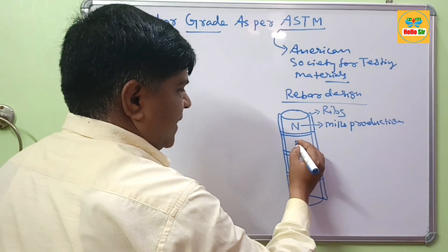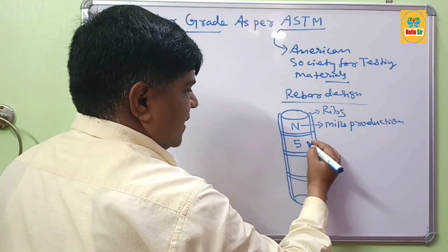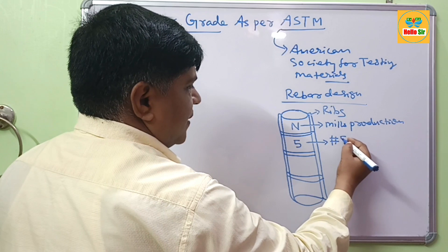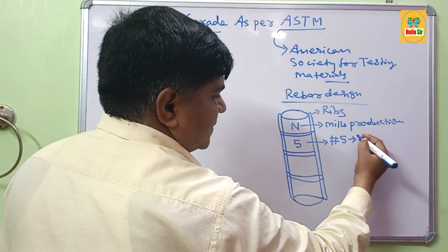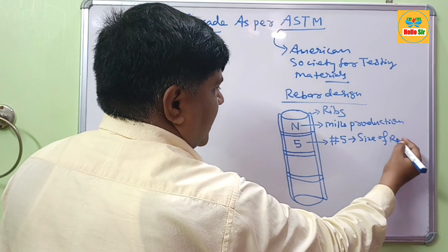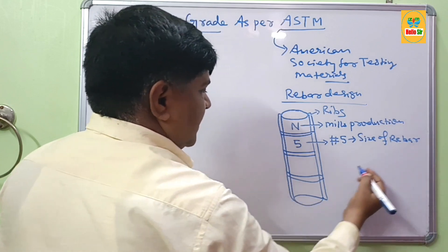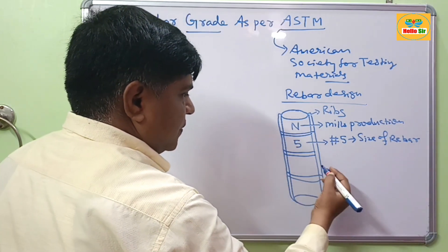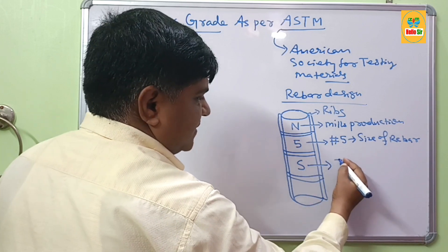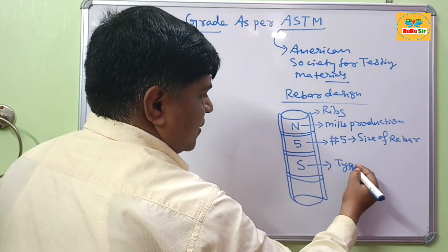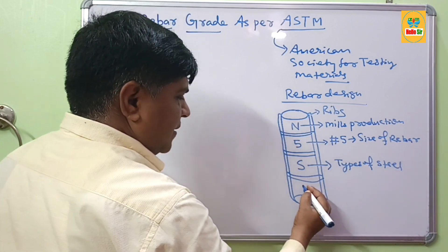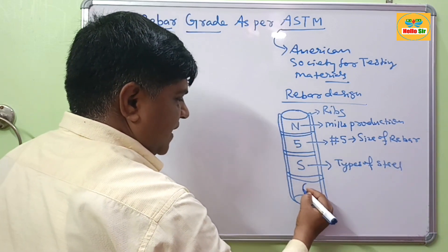The second marking is the size. For example, if this number is 5, that means the size of the rebar is number 5. The third marking stands for the type of steel — suppose this one is 'S', which describes the type of steel. And the fourth marking, for example, is 60.